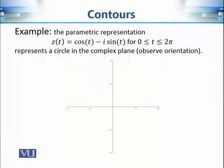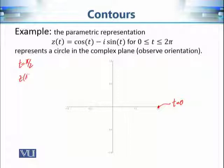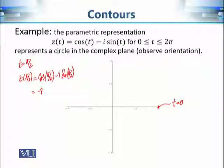Now let's discuss z(t) where x(t) = cos(t) and y(t) = −sin(t), with t again varying from 0 to 2π. At t = 0 the starting point is the same. When t = π/2, z(π/2) = cos(π/2) − i·sin(π/2) = 0 − i·1 = −i. In the previous example t = π/2 gave us +i, so here we are at −i instead, hinting that we are moving in the opposite direction.